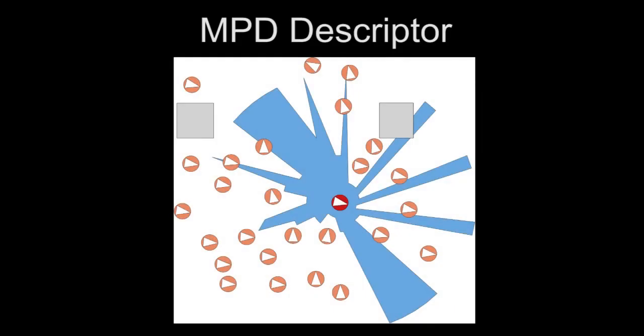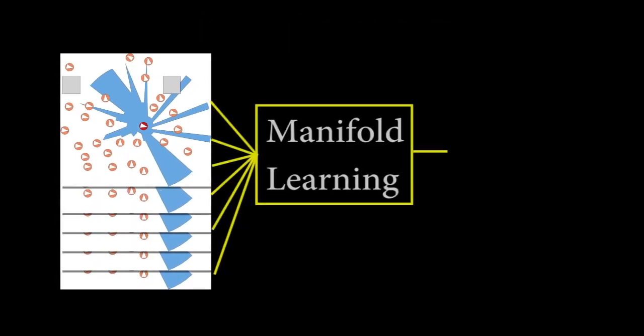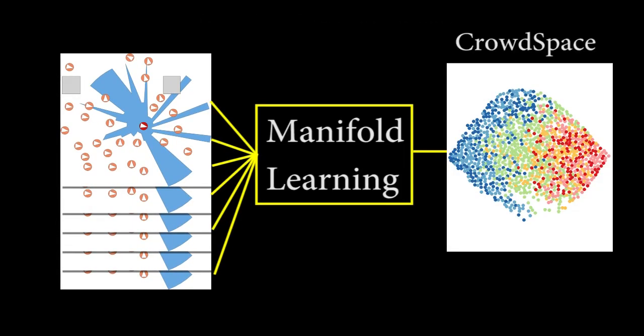Secondly, to facilitate this localized accuracy analysis, we introduce the concept of a low-dimensional CrowdSpace based on local descriptors of the agents in the crowd using a principal component analysis.